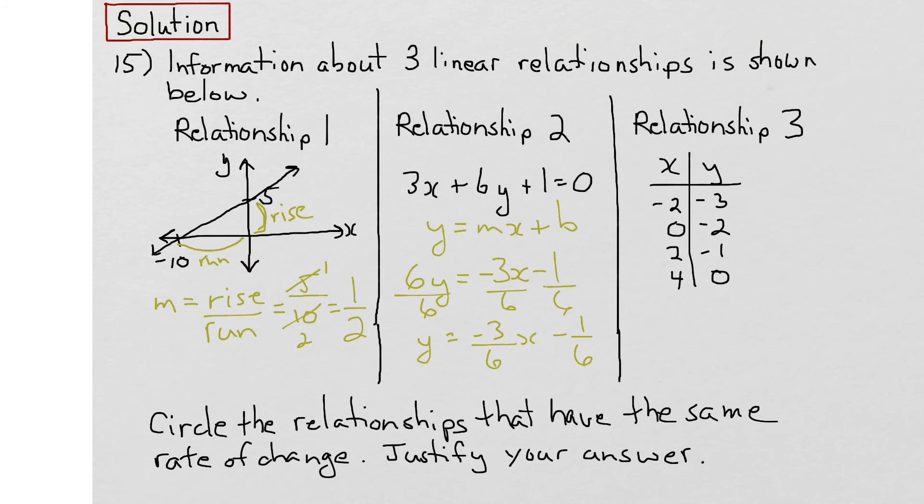We can simplify this value here because 3 goes into 3 once and 3 goes into 6 twice. So this would become negative 1 half. The slope here is given by this value, negative 1 half.